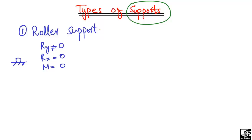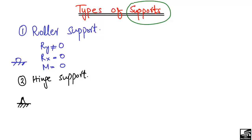Now let's discuss the second kind of support: the hinge support. How can we differentiate between roller and hinge support? In hinge support, it is usually represented by a small triangle with a line and small inclined lines beneath it. This support can take the vertical reaction (not equal to zero) and also the horizontal reaction (not equal to zero), but it cannot take any moment — the moment equals zero in this kind of support.